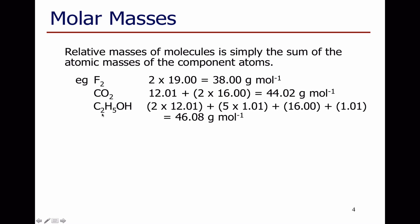For ethanol, I've got two carbons, five hydrogens, an oxygen, and another hydrogen. Two carbons, five hydrogens, an oxygen, and another hydrogen — add all that together: 46.08 grams per mole.